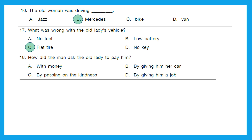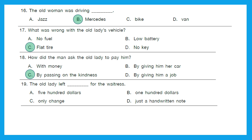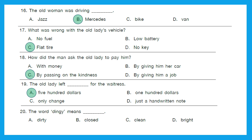Question 18: How did the man ask the old lady to pay him? The answer is by passing on the kindness. Option C. Question 19: 'The old lady left dash for the waitress.' Options are: five hundred dollars, one hundred dollars, only a chain, or just a handwritten note. The right answer is option A, five hundred dollars. Question 20: The word 'dinghy' means — dirty, closed, clean, or bright? Dirty is the right answer because both dinghy and dirty mean unclean. Option A is the right one.